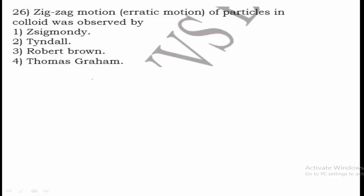Question 26: What is the exact or erratic motion of particles in a colloid called? This zigzag movement of particles in a colloidal solution is said to be Brownian motion, which you have already studied in the chapter Surface Chemistry. It is named after scientist Robert Brown, and hence option 3 is the right answer.